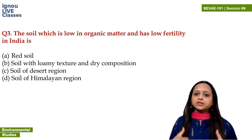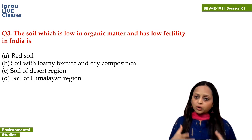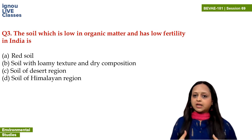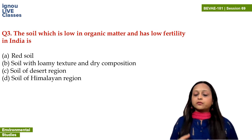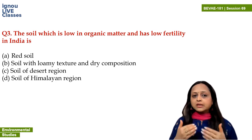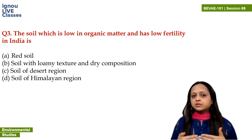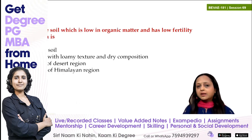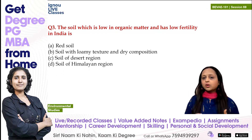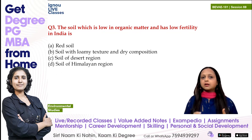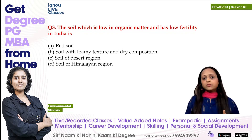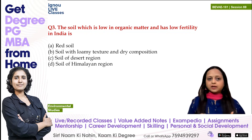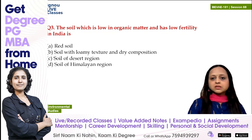The Himalayan region soil is also very fertile, full of organic matter. So among these four options, the soil of the desert region is comparatively low in organic matter and low in fertility. The answer is C.